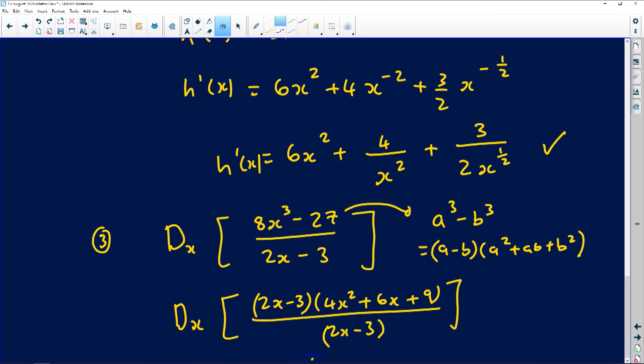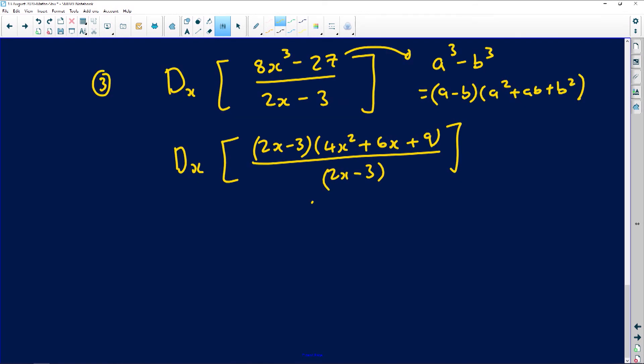And then after that, you're then going to cancel the brackets because they look the same there. The 2x minus 3, you're ending up with just 4x squared plus 6x plus 9, which will amount to a beautiful 8x plus 6. This will be your derivative for this particular question.